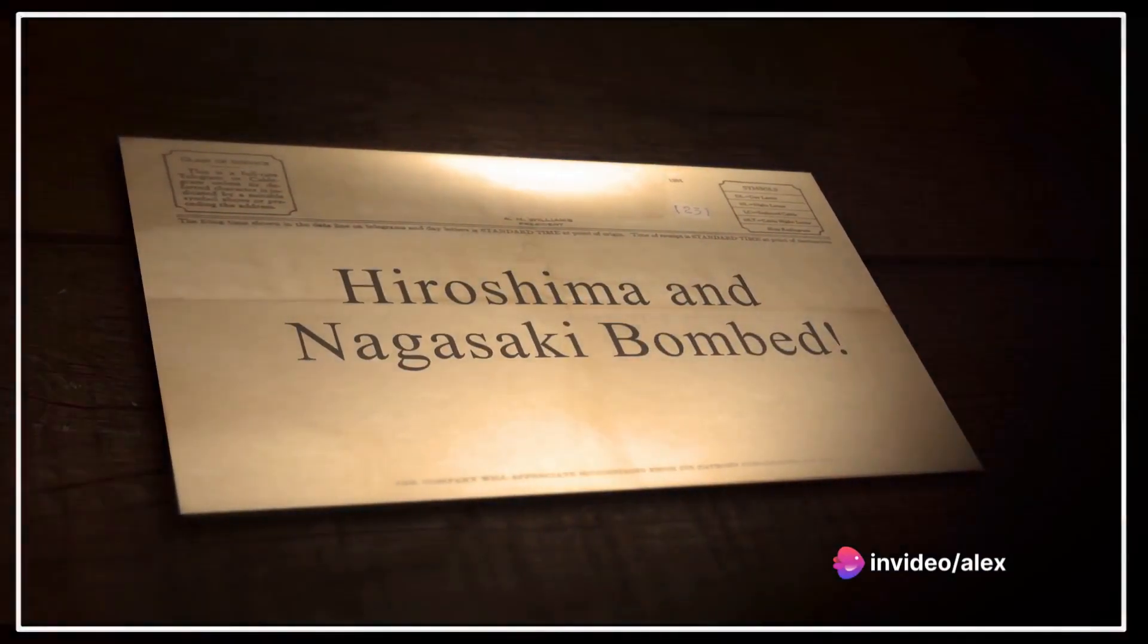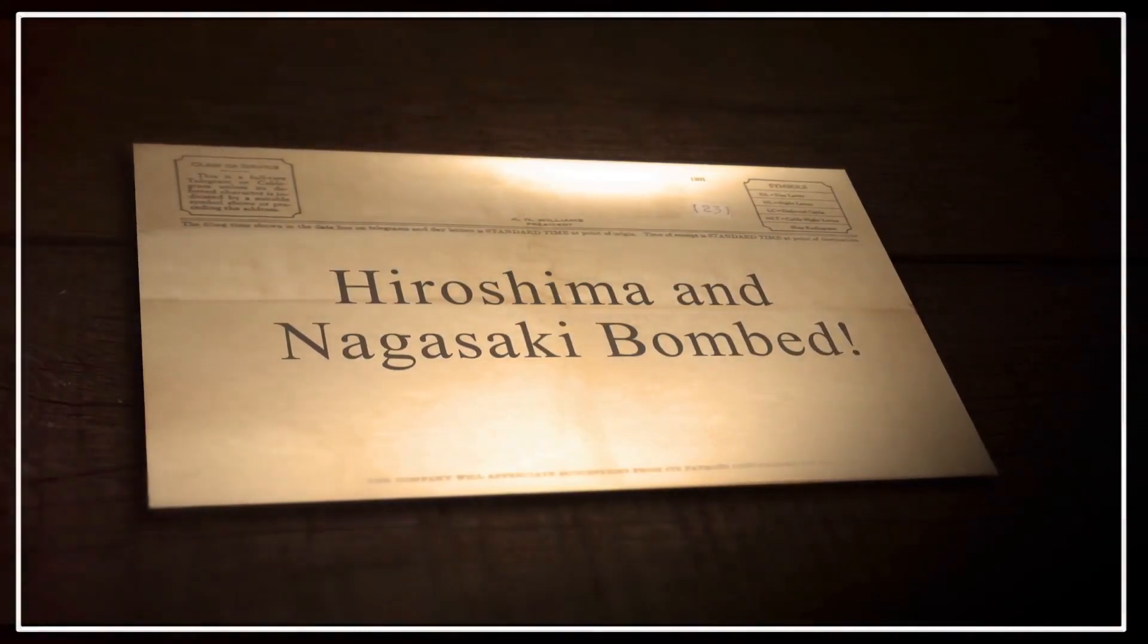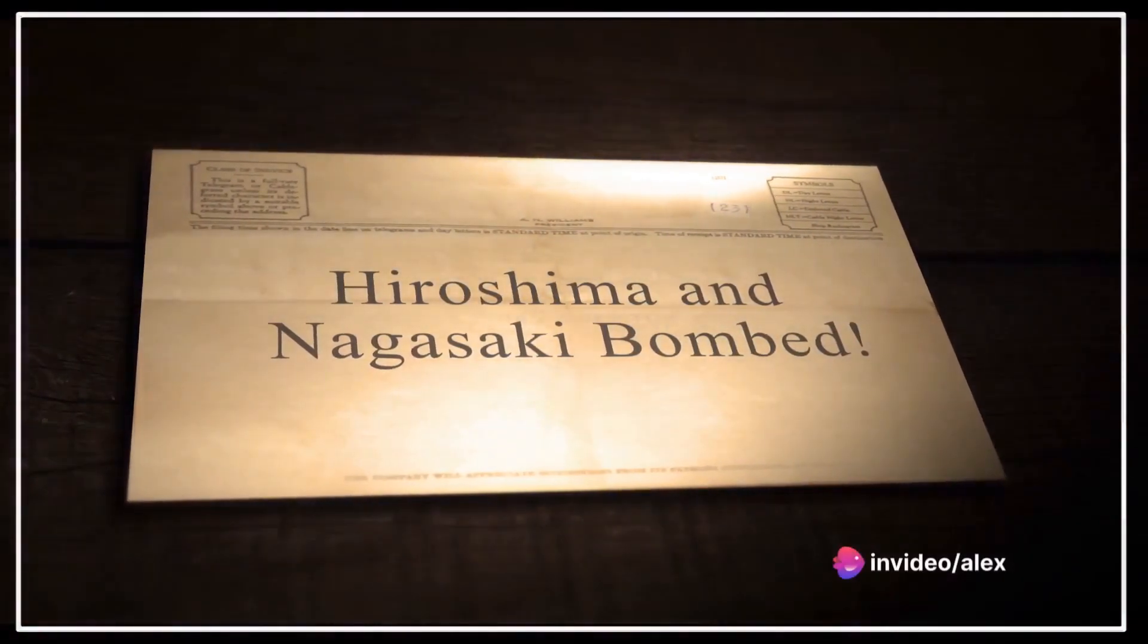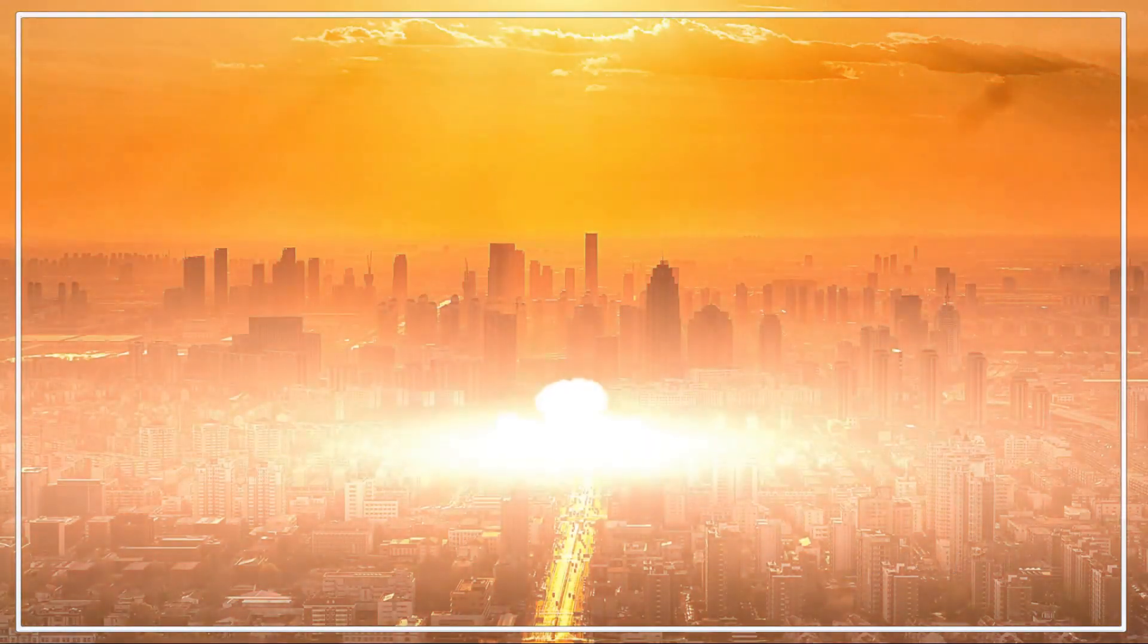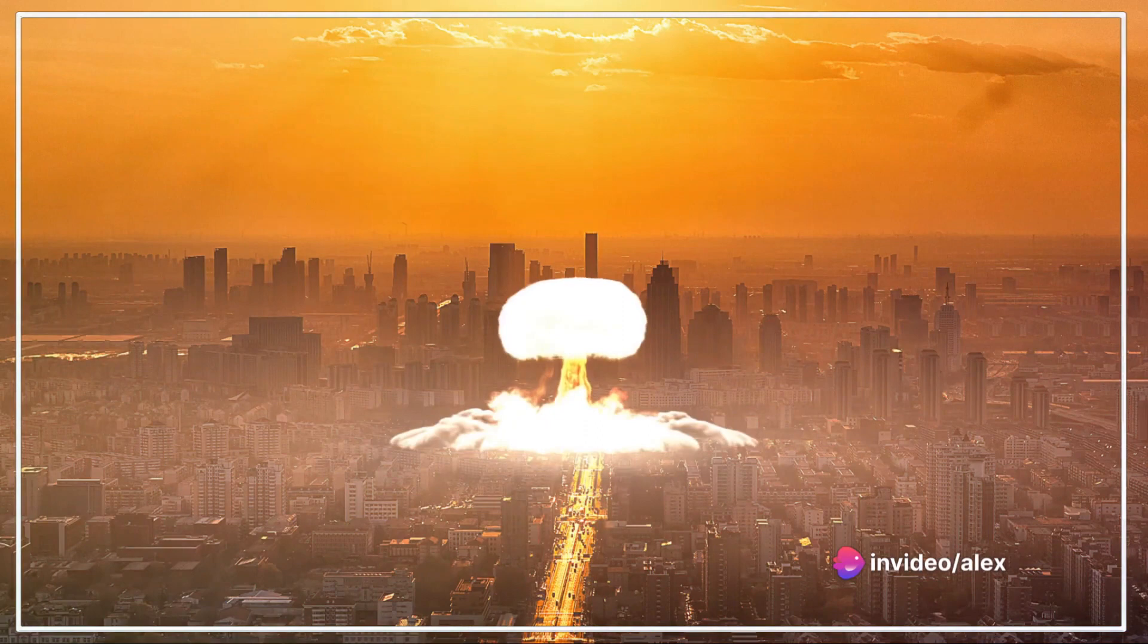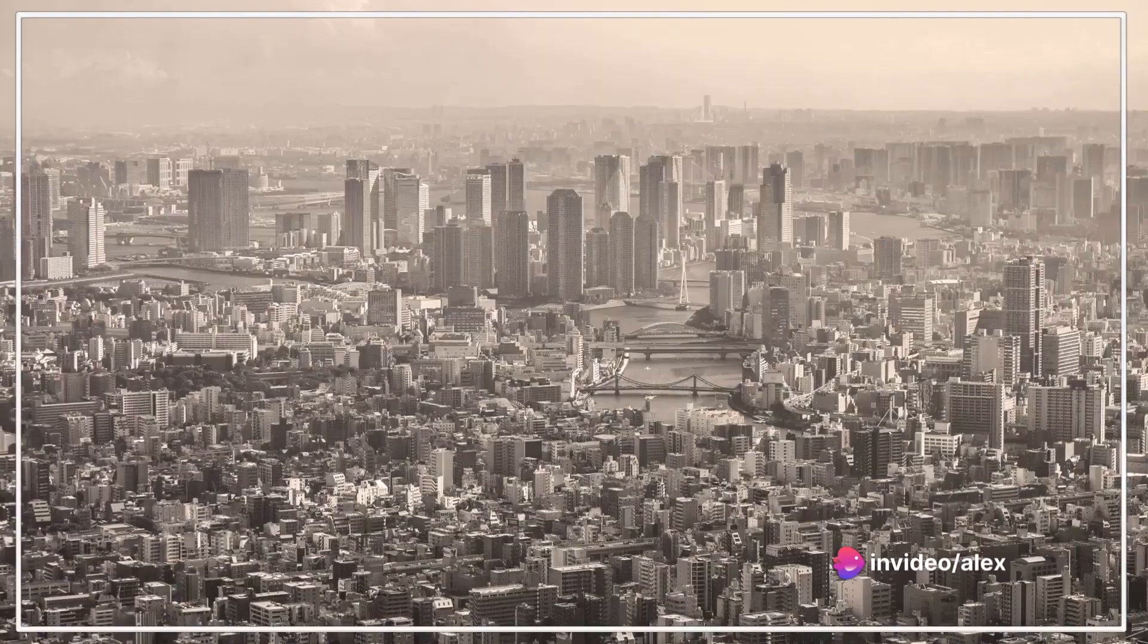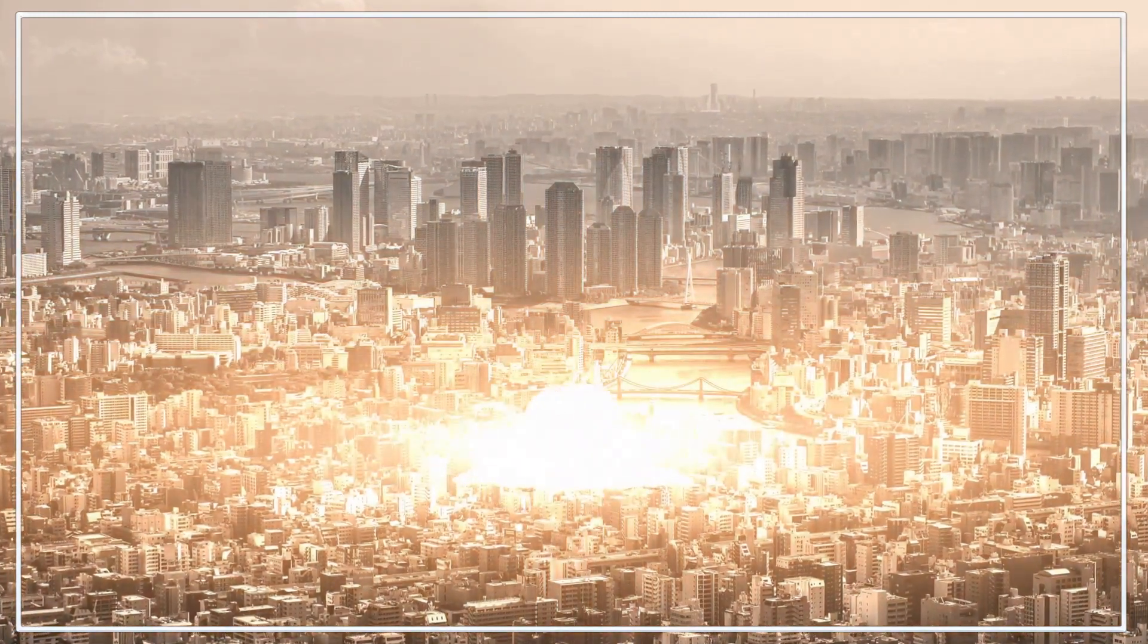let's consider the atomic bombs dropped on Hiroshima and Nagasaki during World War II. The bomb dropped on Hiroshima, known as Little Boy, released an energy equivalent to about 15,000 tons of TNT. Similarly, the bomb dropped on Nagasaki, nicknamed Fat Man, had an energy equivalent of about 20,000 tons of TNT.